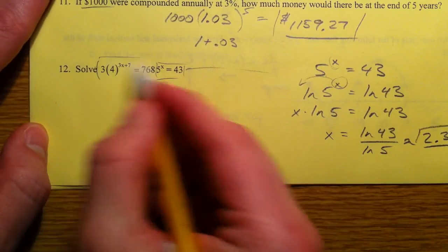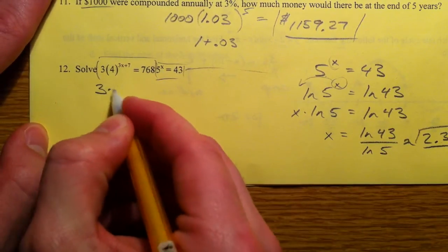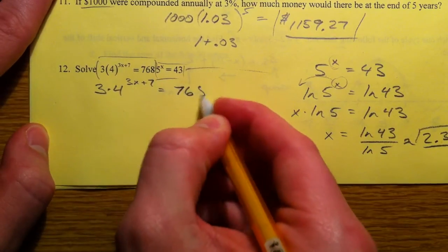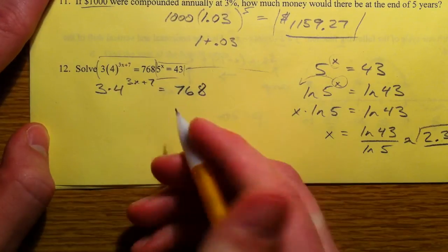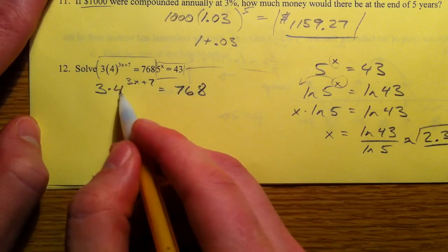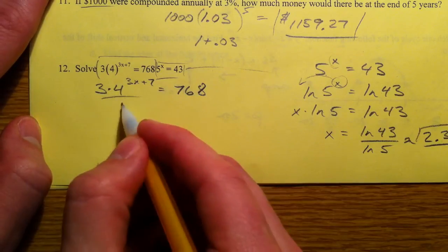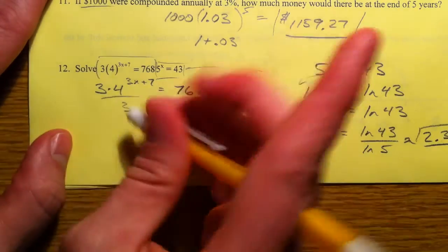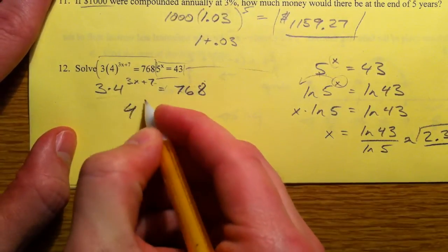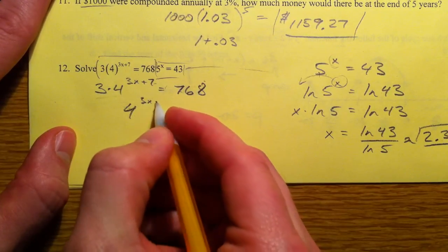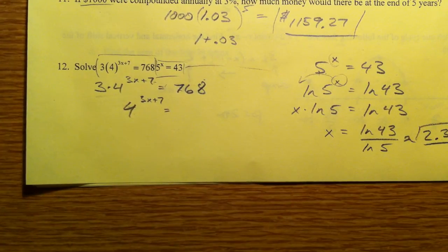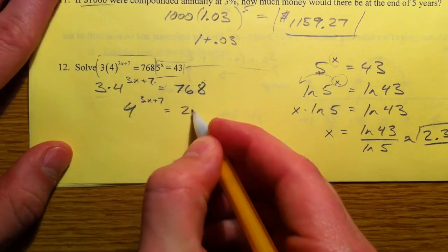Now let's take this: 3 times 4^(3x+7) equals 768. Resist the urge to multiply the 3 times the 4. Let's divide by the 3 first. Then you get 4^(3x+7) equals 256.